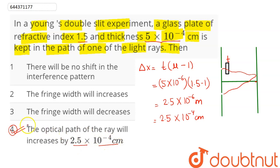Hence, the optical path of the ray will increase by 2.5 into 10 power minus 4 centimeter. So, option 4 is correct. Whereas, option 2 and 3 here says, fringe width will increase or decrease. We can see here, fringe width does not change. Fringe width shall remain same. So, option 2 and 3, both are incorrect.